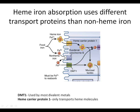Heme carrier protein 1, on the other hand, will only bring iron across the membrane if it's bound into a heme protoporphyrin ring, and that is the only type of molecule that can make it across. So there is no competition — this is essentially a freeway for iron only.